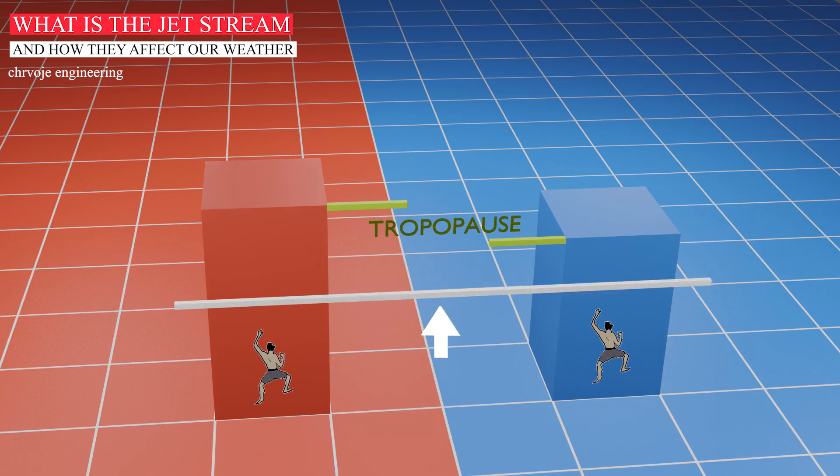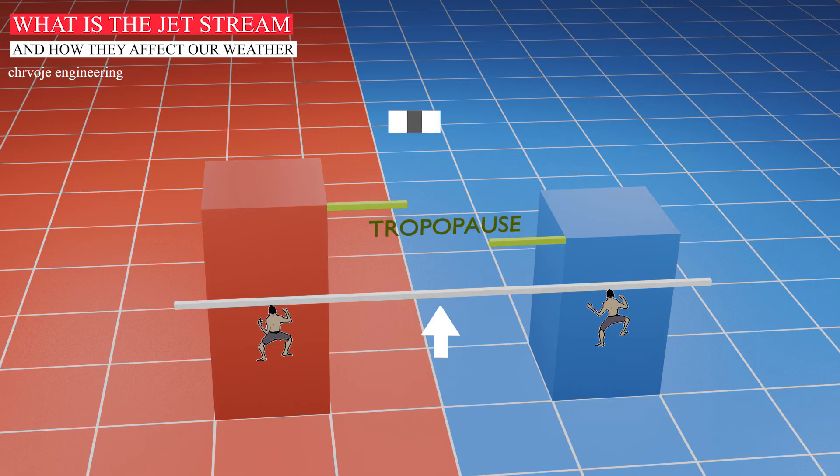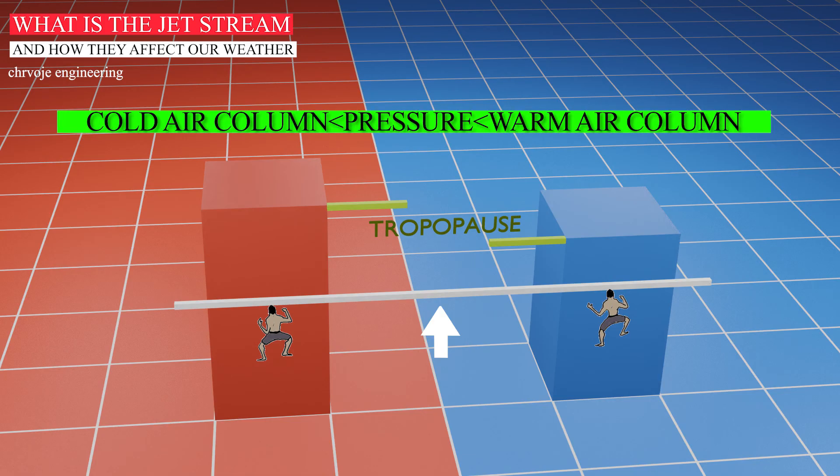So, if you climb to the same height in both columns, you would discover that the cold air column has lower atmospheric pressure while the warm air column has greater atmospheric pressure.